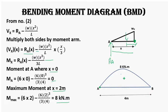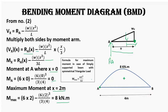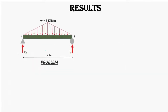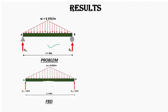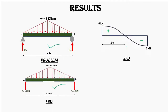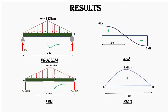This is our bending moment diagram with a maximum bending moment of 8 kilonewton-meters. We can also find the maximum bending moment using the standard formula. To summarize: the free body diagram shows the beam setup, the shear force diagram has a maximum shear force of 6 kilonewtons, and the bending moment diagram has a maximum bending moment of 8 kilonewton-meters.